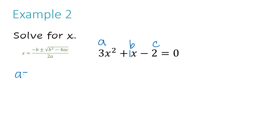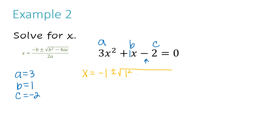So my a value equals 3, my b value equals 1, and my c value equals negative 2. Remember, you do need to check for the sign — for this particular example we have a negative, so we need to carry that over in our letter. Now I need to plug these values into the quadratic formula: x equals negative b, which is negative 1, plus or minus the square root of b — 1 again — squared, minus 4, times a which is 3, times c which is that negative 2. I like to clarify that I'm multiplying here by using parentheses around all of those.